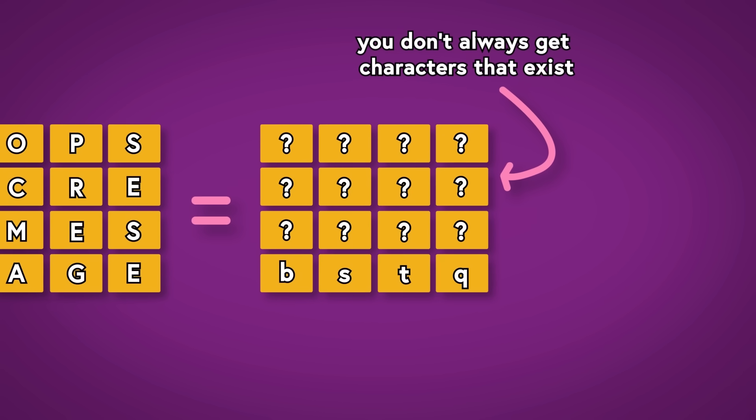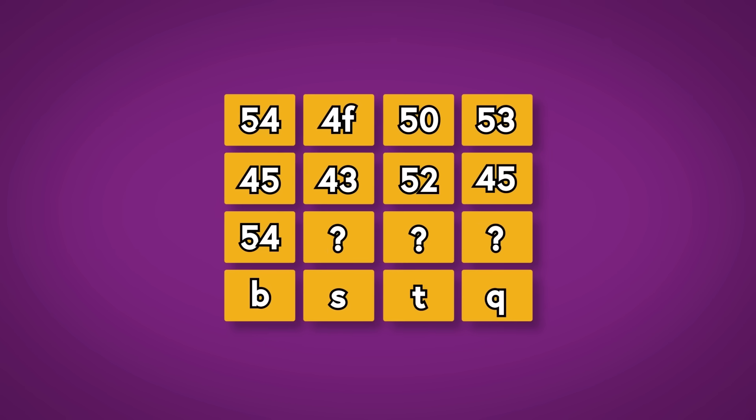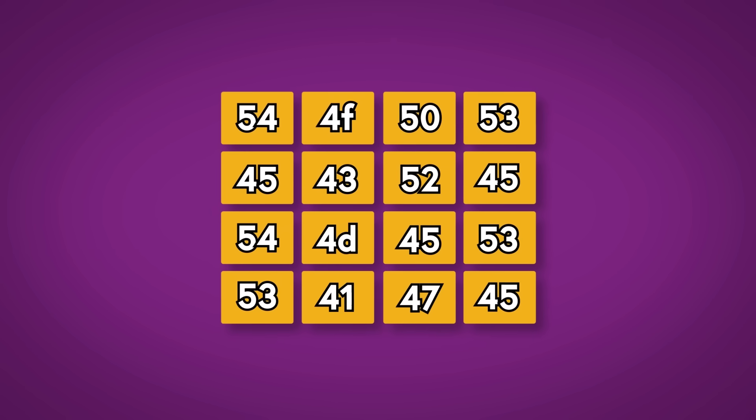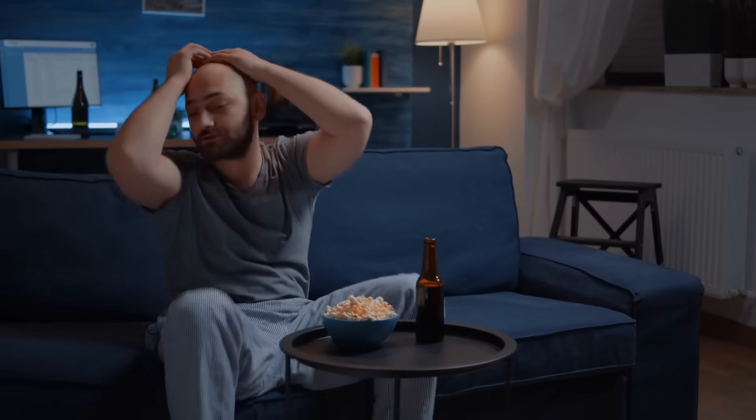This is already pretty secure, but we're just getting started. Next, we're going to take everything in our block, convert it to a hexadecimal, and then substitute every single character with a character from this table—the Rijndael S-box—not to be confused with the Rijndael Xbox, which is the worst console that I've ever used.